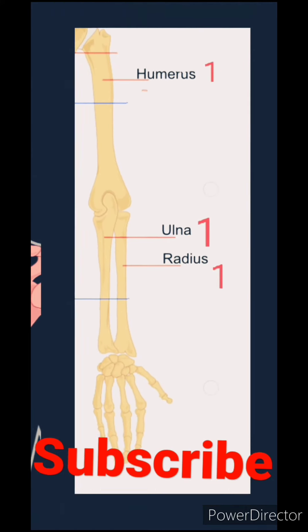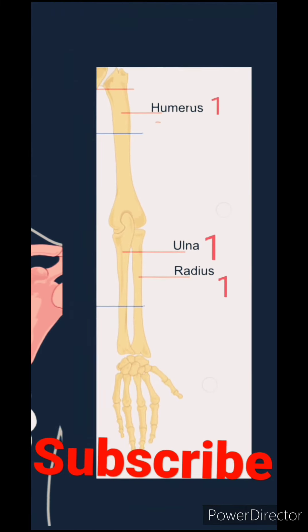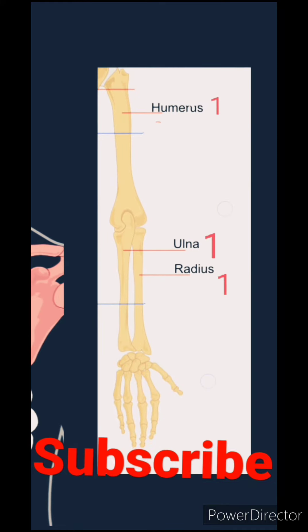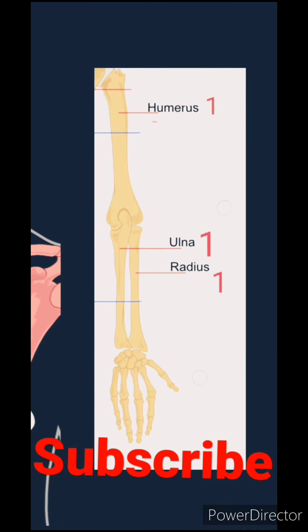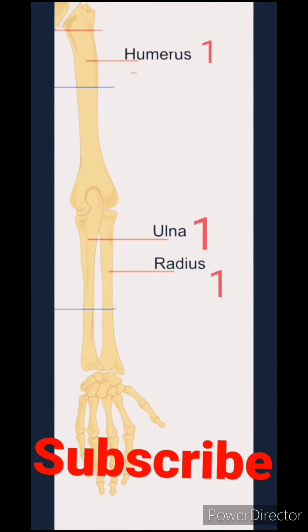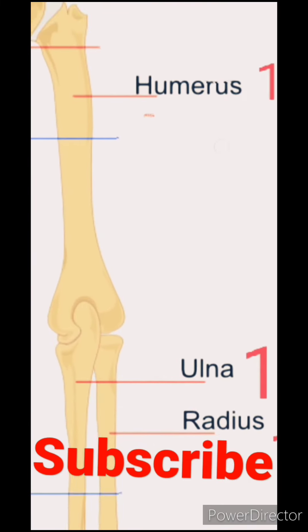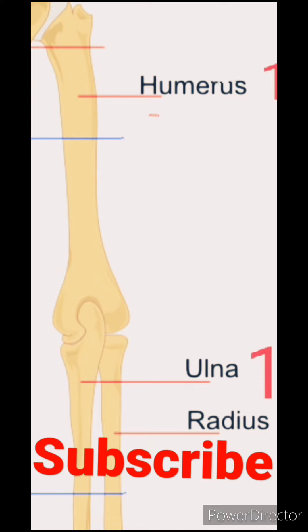Hello everyone, today we will learn the names of the bones of the human hand. In total there are 30 bones per hand, and our two hands have a total of 60 bones.